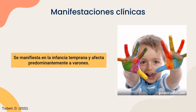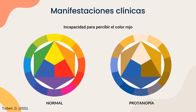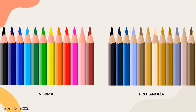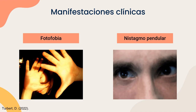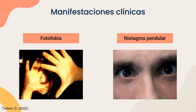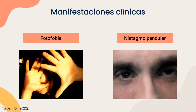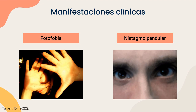Continuando con las manifestaciones clínicas, la protanopía se manifiesta en la infancia temprana y afecta predominantemente a los varones. La principal manifestación es la incapacidad para percibir el color rojo. Aquí podemos observar una imagen normal y otra como la vería una persona con esta alteración, así como una serie de colores donde los de la izquierda son los normales y los de la derecha es como los percibe una persona con protanopía. Otras manifestaciones clínicas son la fotofobia, que es una molestia ocular en presencia de luz brillante, y el nistagmo pendular, que es el rápido movimiento de ojos hacia los lados.